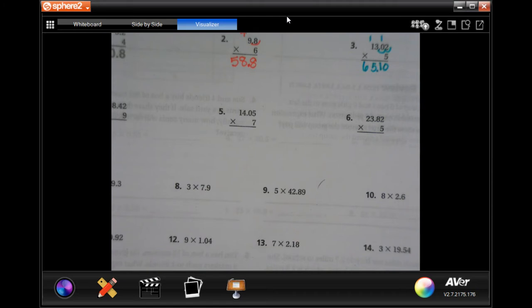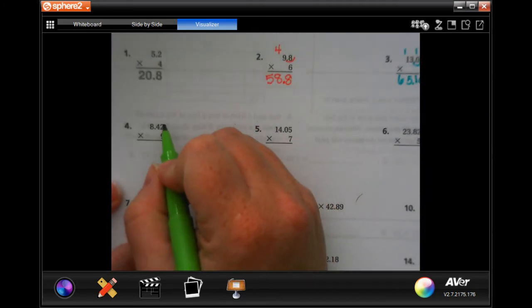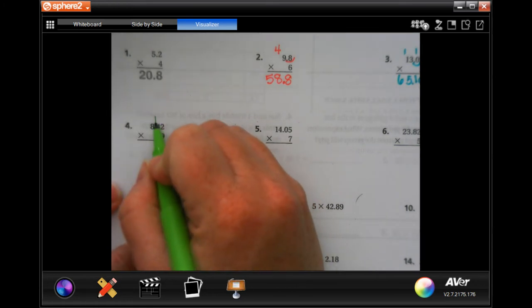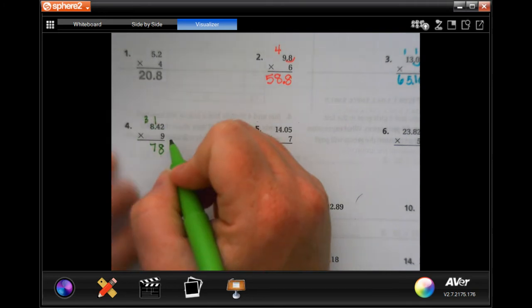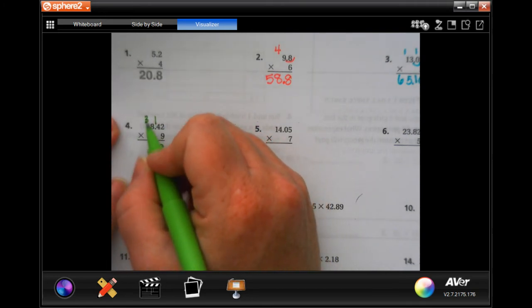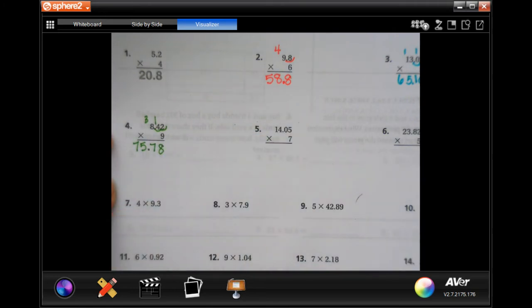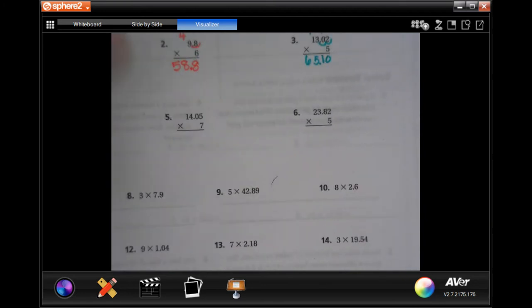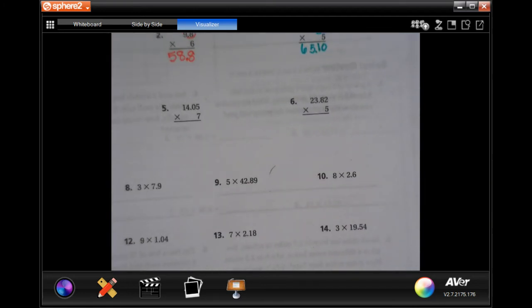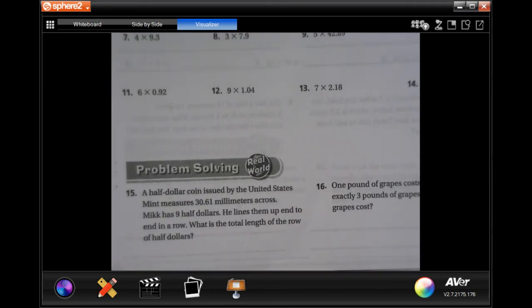One more, guys. All right. So, this is the decimal. It's putting it in, multiplying, and then putting the decimal where it goes.